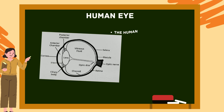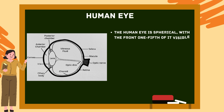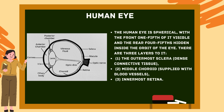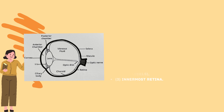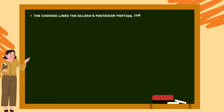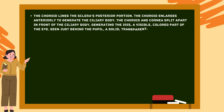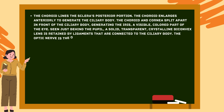The human eye is spherical, with the front one-fifth visible and the rear four-fifths hidden inside the orbit. It has three layers: the outermost sclera (dense connective tissue), the middle choroid (supplied with blood vessels), and the innermost retina. The choroid lines the posterior sclera and enlarges anteriorly to form the ciliary body. The iris is a visible colored part seen just behind the pupil. A solid transparent biconvex lens is held by ligaments connected to the ciliary body, and the optic nerve runs from the eye to the brain.